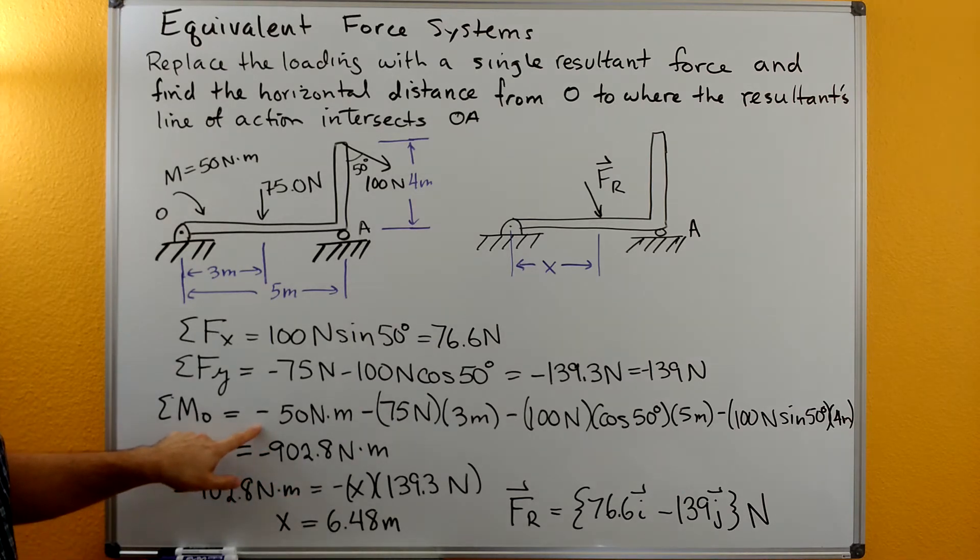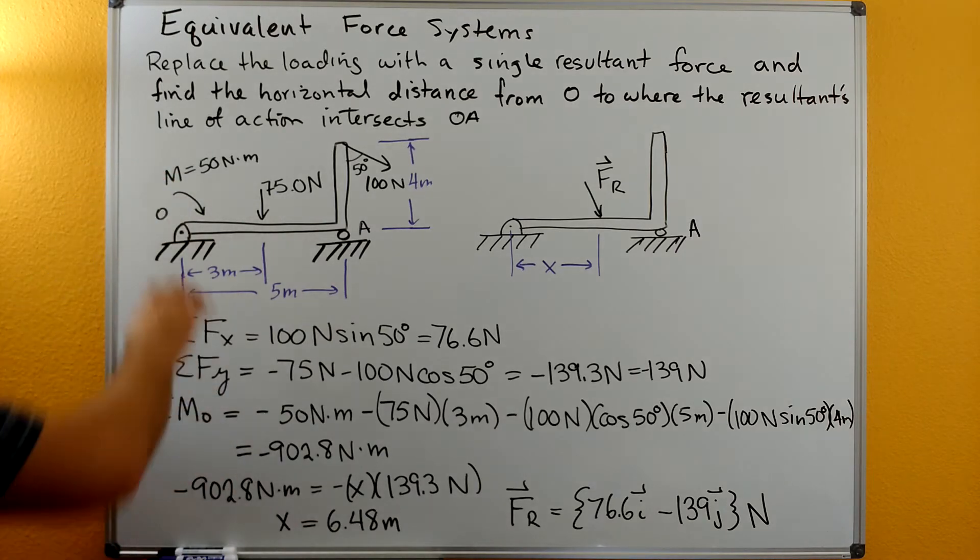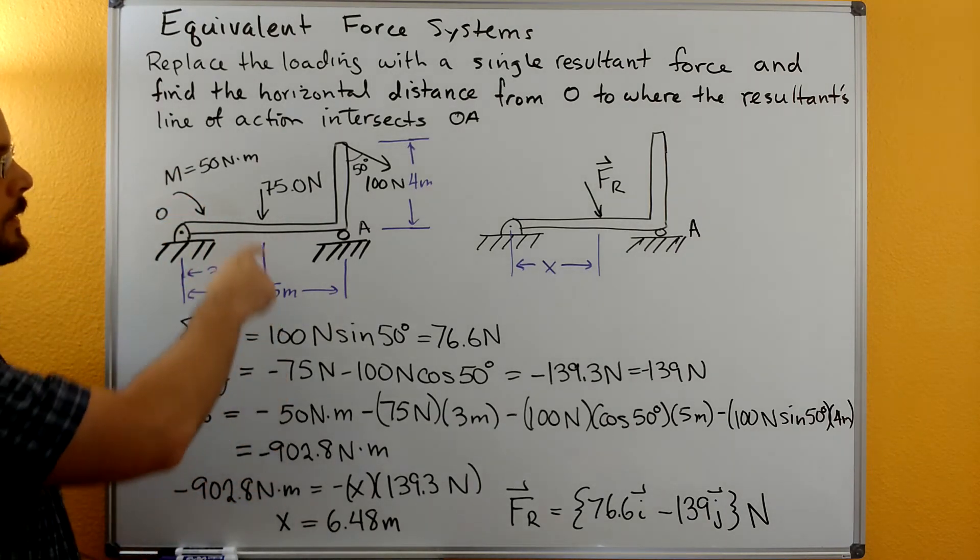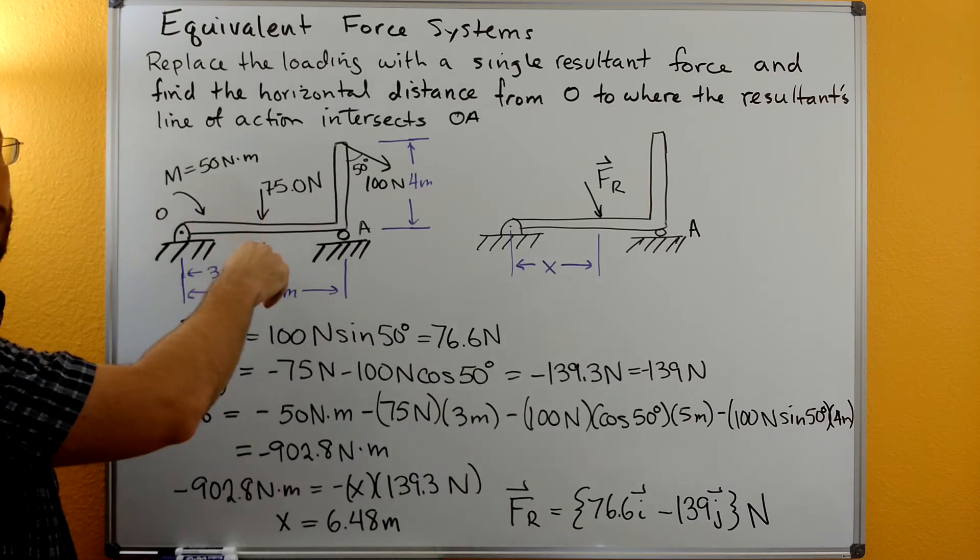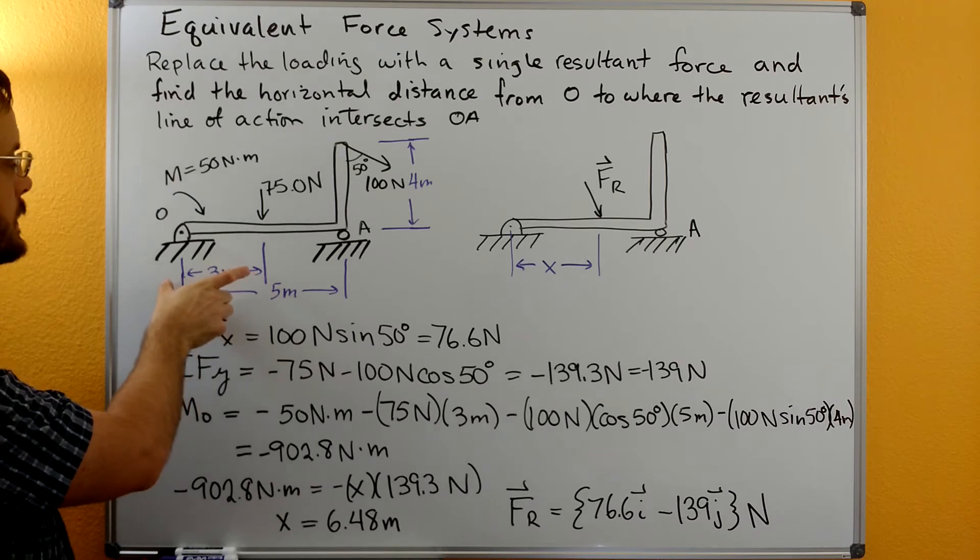Over here the sum of the moments, we have the 50 Newton meter moment; by the right-hand rule that's negative or clockwise. The 75 Newton force is acting in the Y direction, so we'll multiply it by its X distance back over to O.